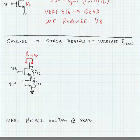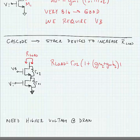So we can show that our load is equal to RO2 times 1 plus GM plus GMB times the resistance at the source, which is RO1.